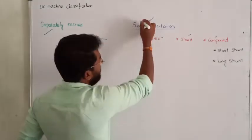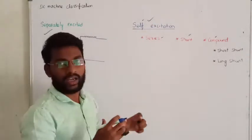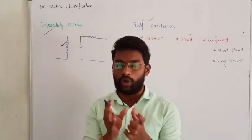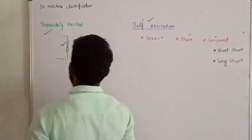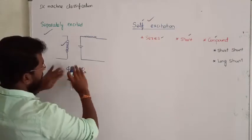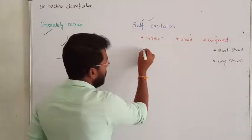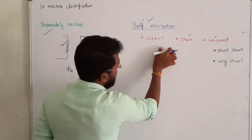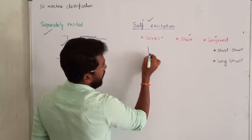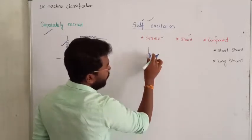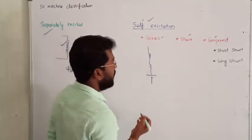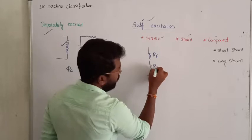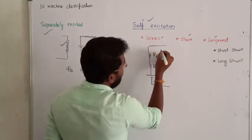In case of self-excitation series, the series winding and the armature winding both are connected in series. In DC, we are not going to encounter the effect of inductance, so we are going to consider only the resistance offered by the field and the resistance offered by the armature winding — both are connected in series. That is the series configuration.